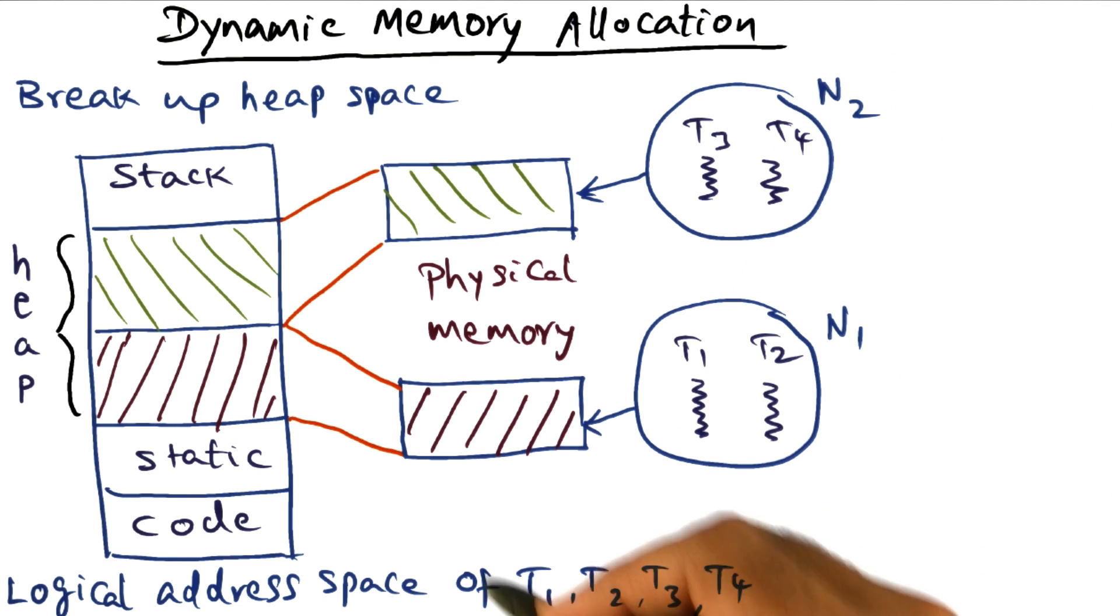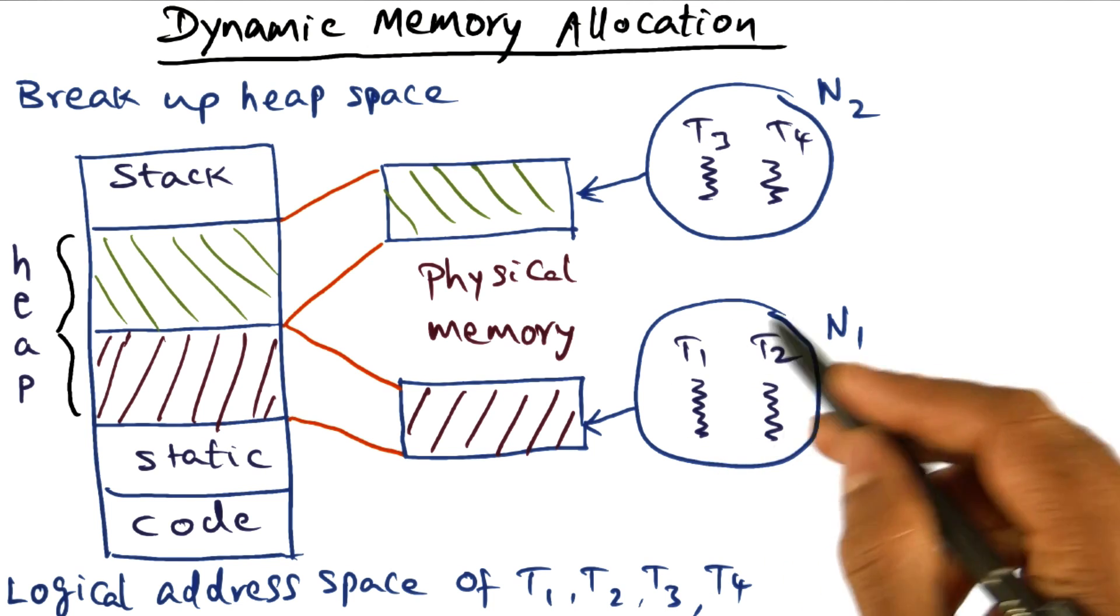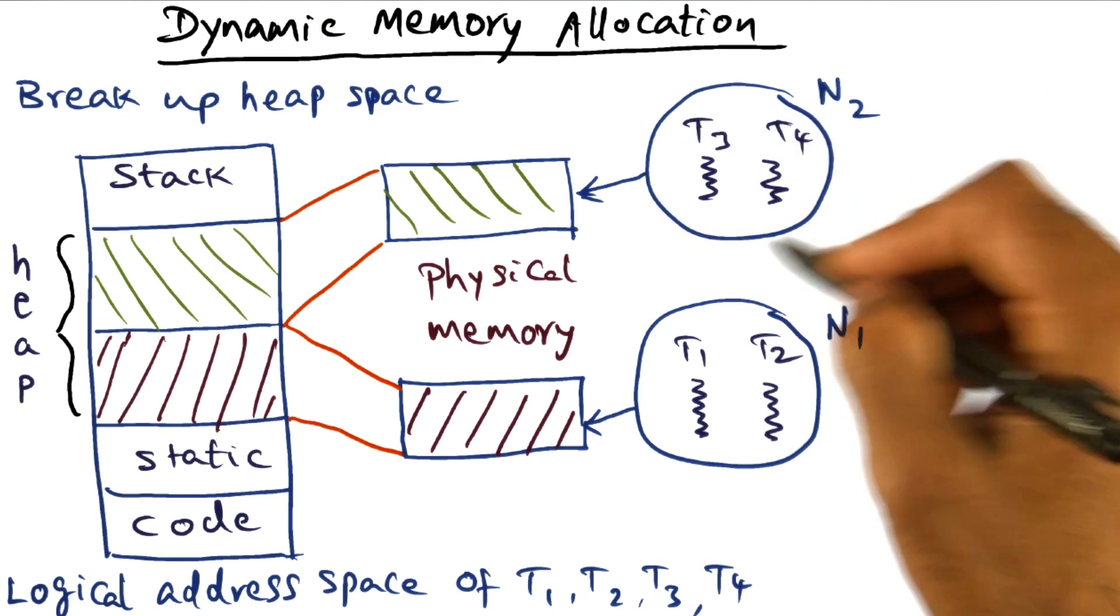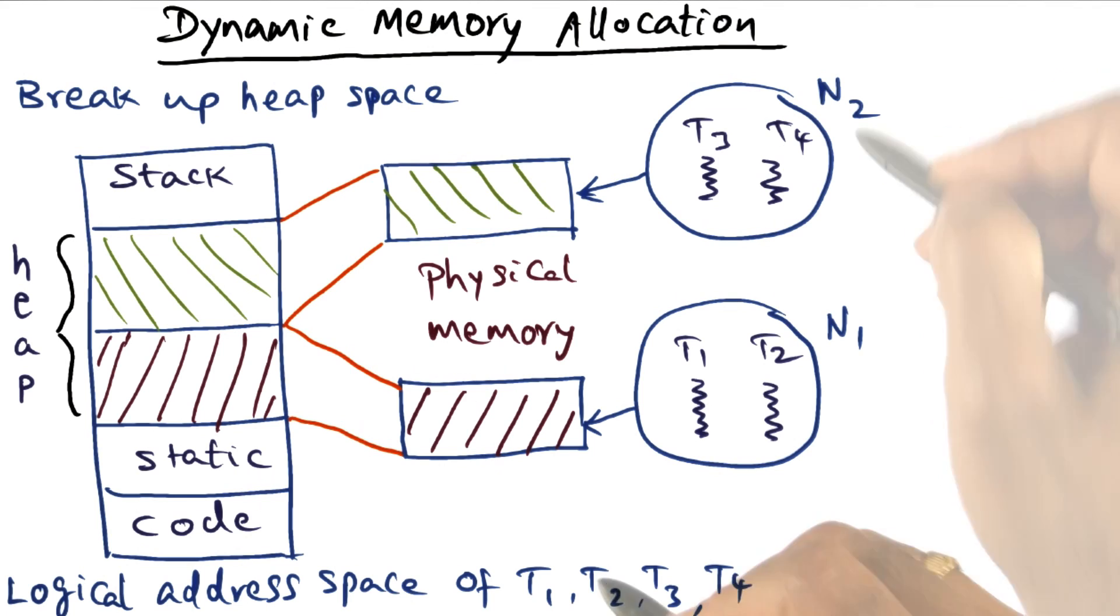Suppose the mapping of the threads of this particular application is such that T1 and T2 are executing on N1, and T3 and T4 are executing on N2, and it's a NUMA machine. So there's a physical memory that is local to this node N1.